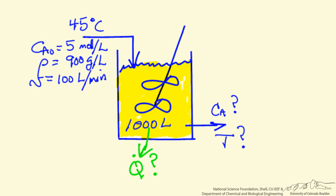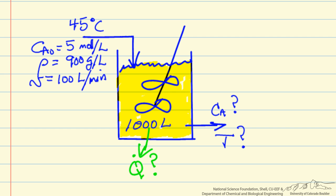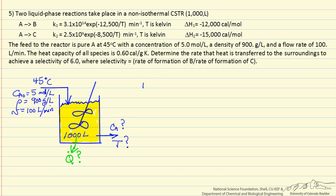And so this is a multi-step solution. First we're going to use the selectivity of 6. We're going to use that to determine the temperature, because as we change the temperature, since the reactions have different activation energies, we're going to change the selectivity.